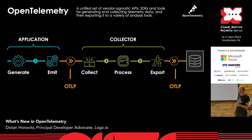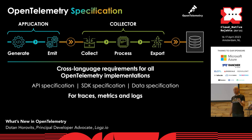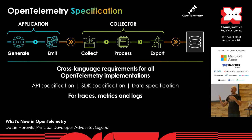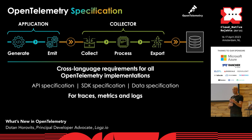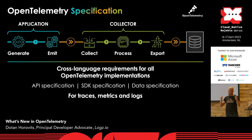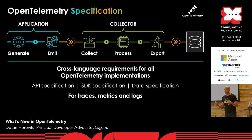Let's quickly go over each piece. First, there is the OpenTelemetry specification — not a component, but it governs the cross-language requirements that each implementation needs to adhere to. It includes the API spec, the SDK spec, and the data spec — things like semantic conventions for traces, metrics, and logs across all signals. This solves the fragmentation problem where each tool, vendor, and programming language had its own way of doing things, and once everything is under one data model, correlation becomes very easy.